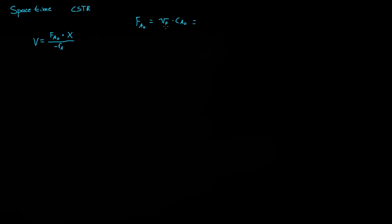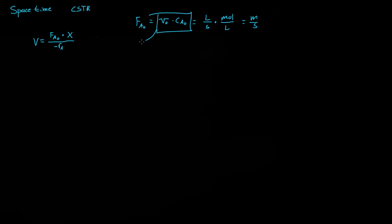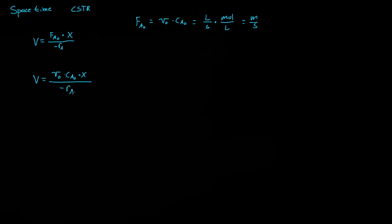The volumetric flow rate is just liters per second, times the concentration which is moles per liter, so when you multiply that out you just get moles per second — the initial molar flow rate of A. If we plug this in, we now get: volume equals V₀ times the concentration of A initially, times the conversion of A, all divided by the reaction rate.